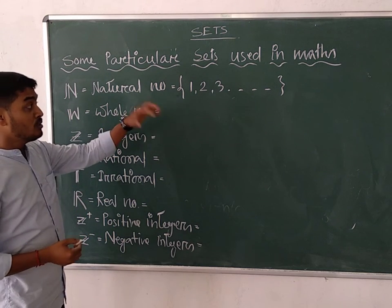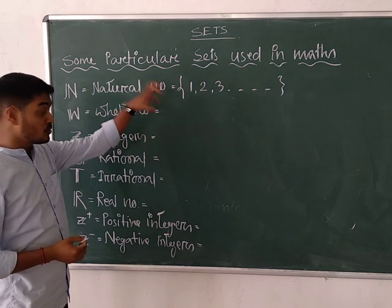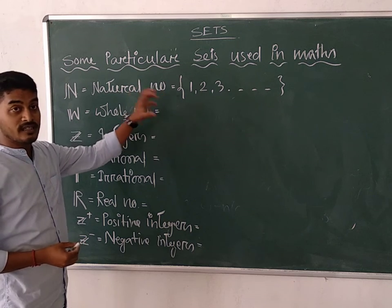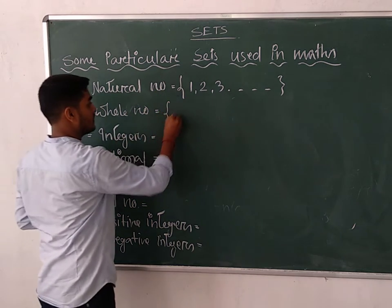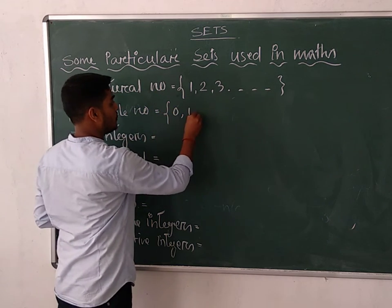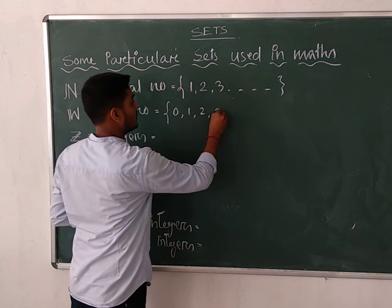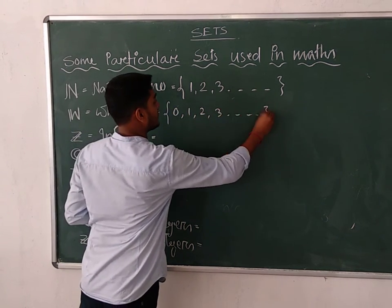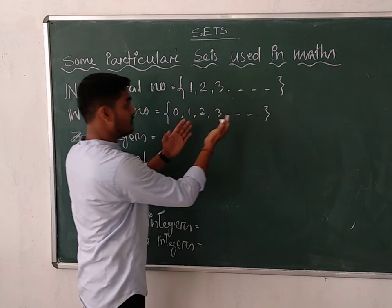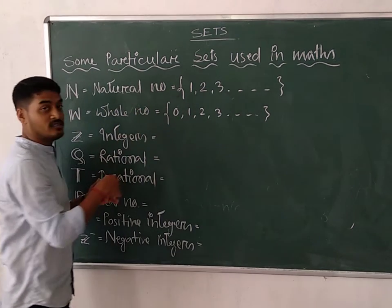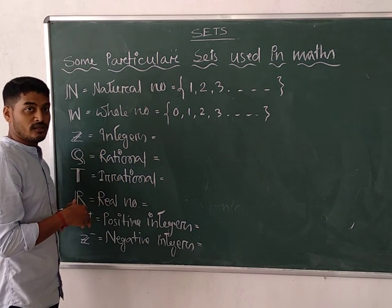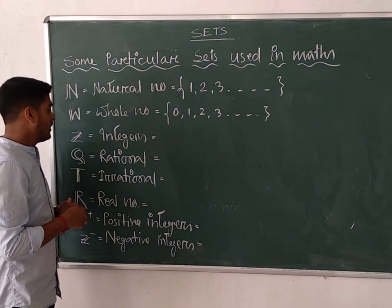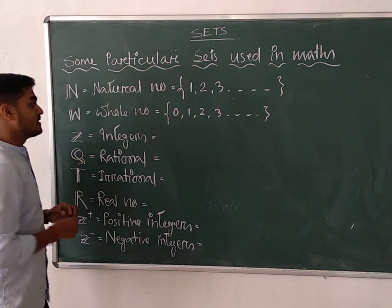Whole numbers: whenever we add 0 to the natural number set, it becomes the whole number set — so 0, 1, 2 ... That means you can say natural numbers including 0 are known as the whole number set.